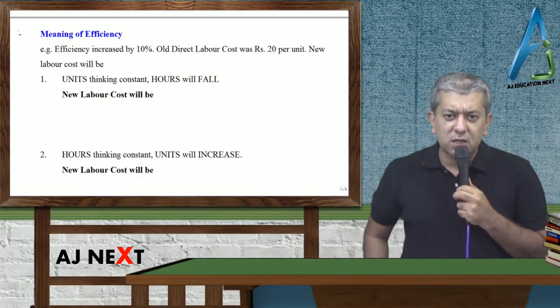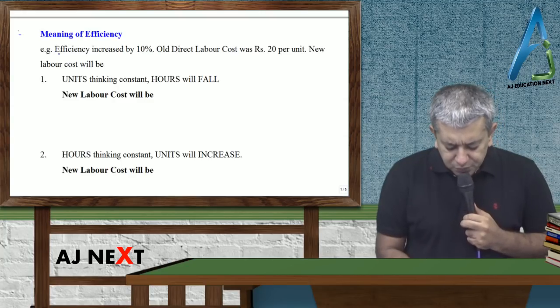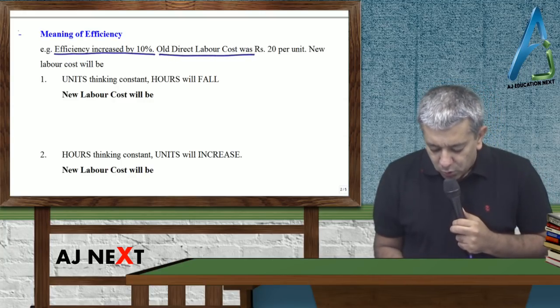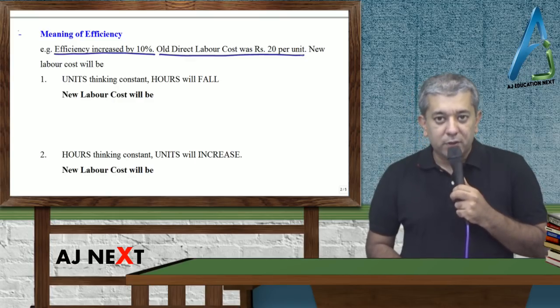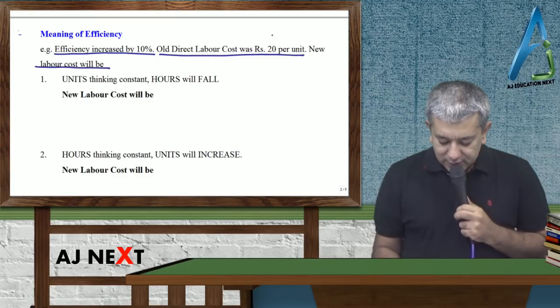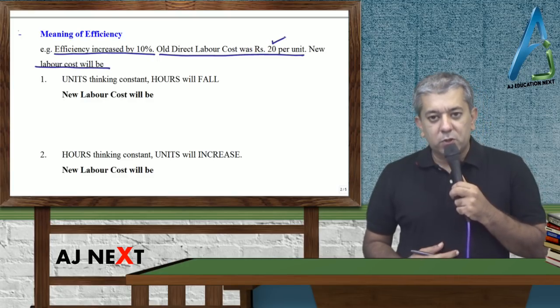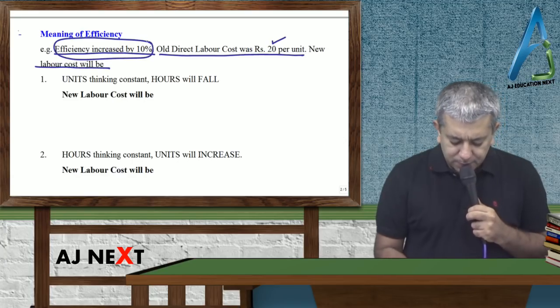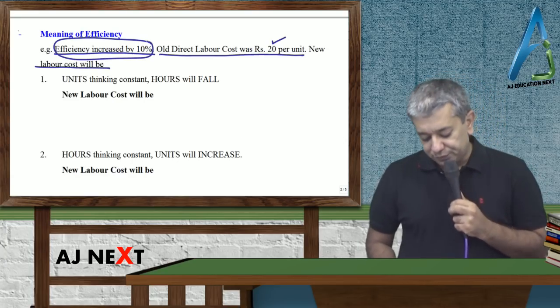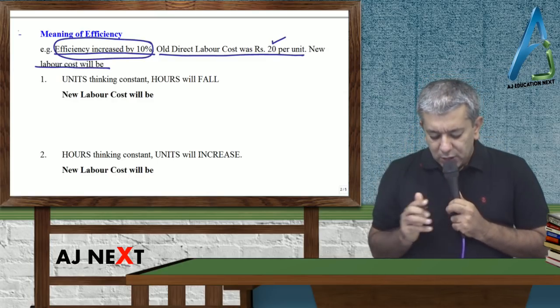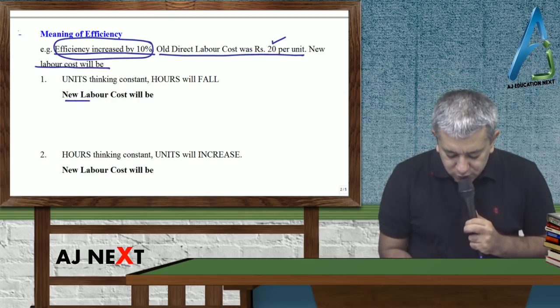Efficiency Ka Ek Famous Requirement Ata Hai. Efficiency increased by 10%. Old Direct Labour Cost was 20 per unit. New Labour Cost per unit will be kitna? Obviously, agar efficiency bada jaega, cost kam ho jaega na. Toh new cost kitna hoega?